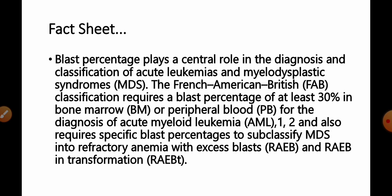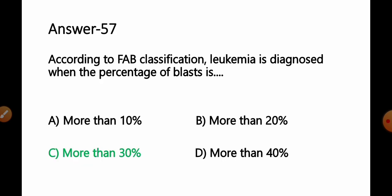The FAB classification also requires specific blast percentages to sub-classify myelodysplastic syndrome (MDS) into refractory anemias with excess blasts (RAEB) and refractory anemias with excess blasts in transformation (RAEB-T). So according to FAB classification, a minimum of 30% blast cells is required to confirm leukemia. Option C, more than 30%, is the correct answer.